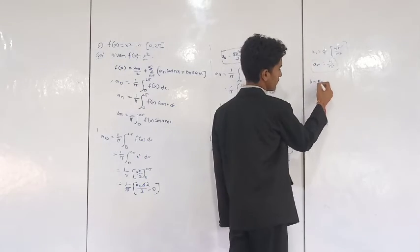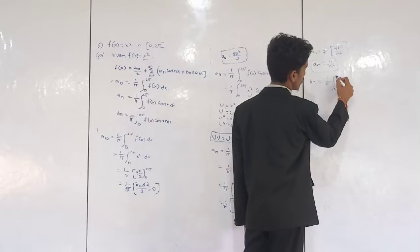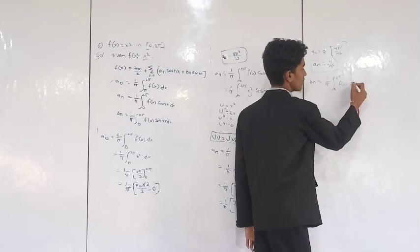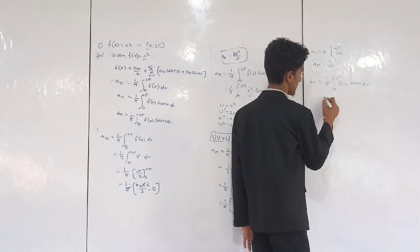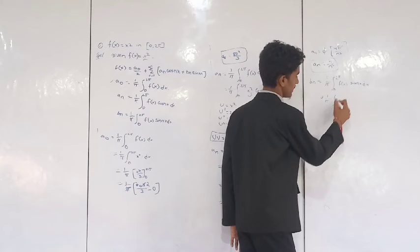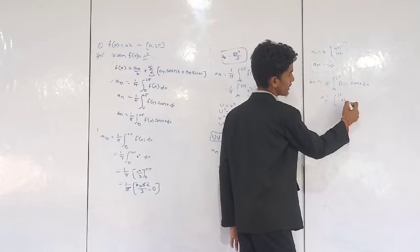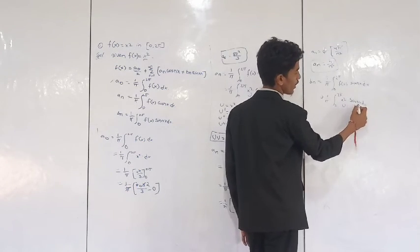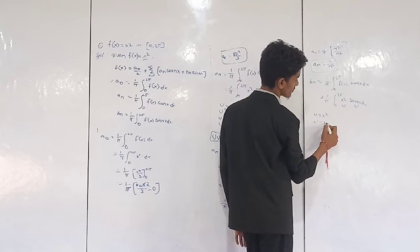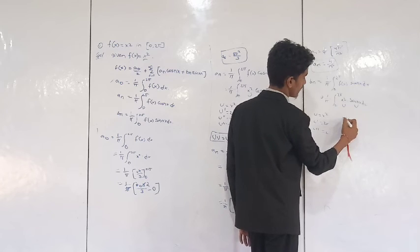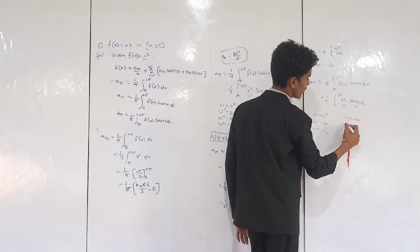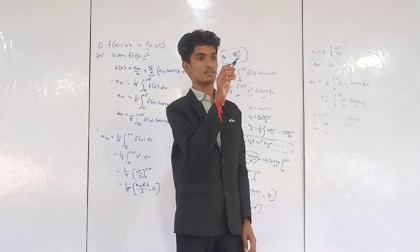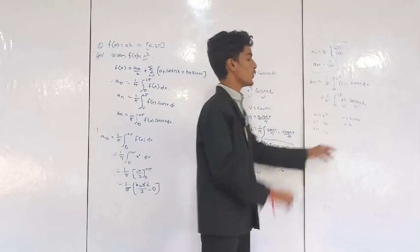After that we calculate Bₙ. Bₙ equals 1 by π, integral from 0 to 2π of f(x) sin(nx) dx, which means 1 by π, integral of x² sin(nx) dx. Using the UV formula: u = x², u' = 2x, u'' = 2, v = sin(nx), v₁ equals... Chandu, Ajay — what is the derivative of sin(nx)?